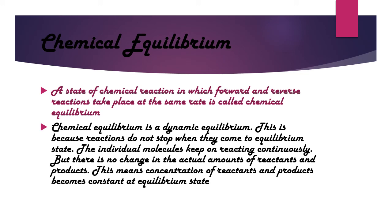Chemical equilibrium can also be called Dynamic Equilibrium. Why? Dynamic means in motion. When we say a reaction has reached equilibrium state, that does not mean the reaction has stopped — the reaction does not stop. The rate of conversion of reactant into product and product into reactant becomes equal. This is because the individual molecules keep on reacting continuously, but there is no change in the actual amount of reactants and products. The concentration of reactants and products becomes constant at equilibrium state.